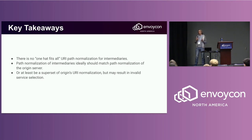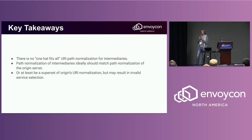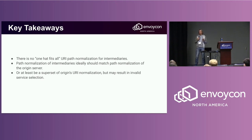There is no one right way. Even strictly standard-compliant normalization is not enough, as the example showed. The right approach is to match path normalization on Envoy to path normalization on the origin or upstream server. In that case, you know for sure that your access control policy will be applied safely.